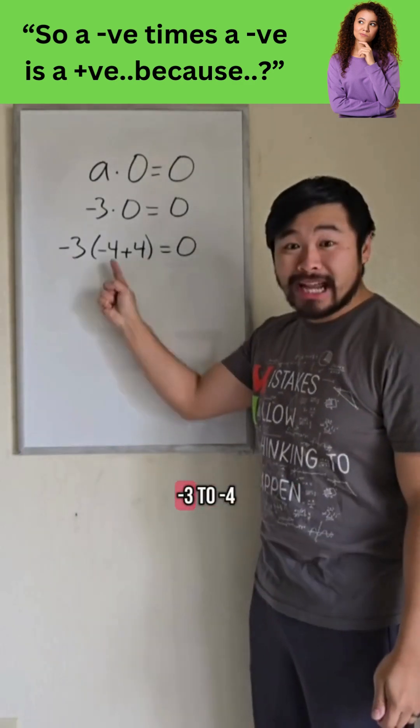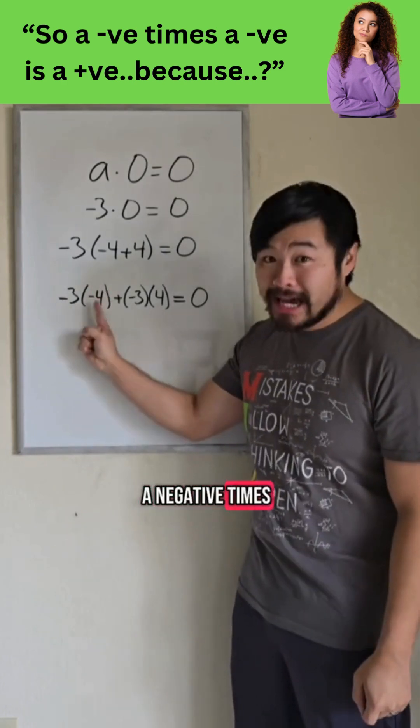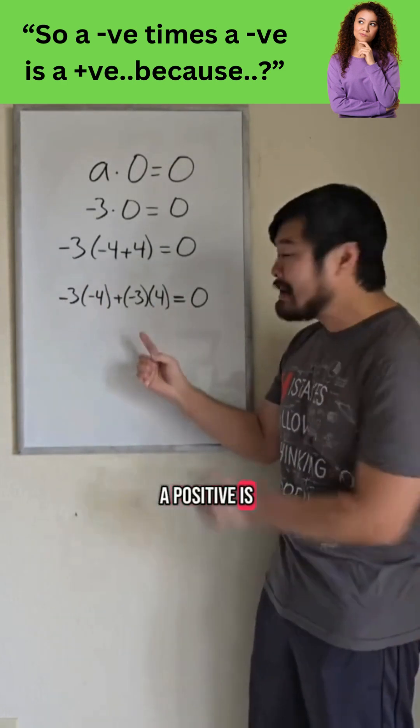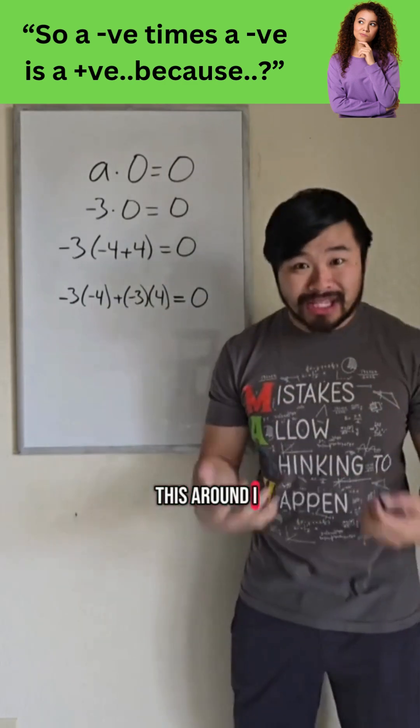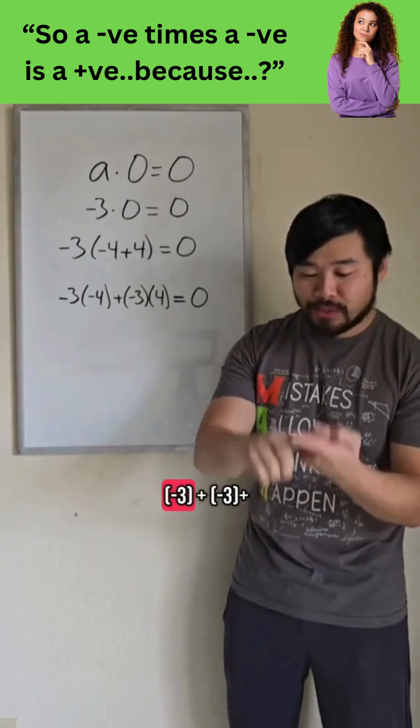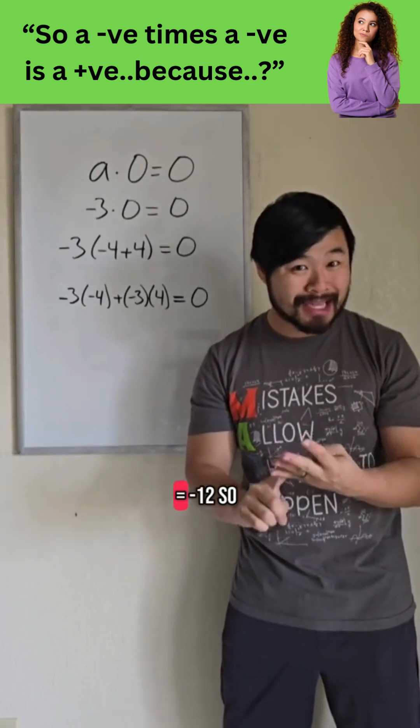Then let's distribute negative 3 to negative 4 and 4. Now pretend we don't know what a negative times a negative is, but we can convince ourselves what a negative times a positive is. If we switch this around, I can think of this as four groups of negative 3, and I can convince myself that negative 3 plus negative 3 plus negative 3 plus negative 3 equals negative 12.